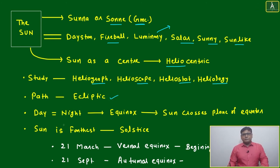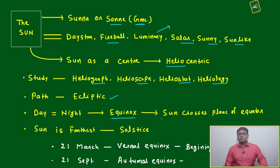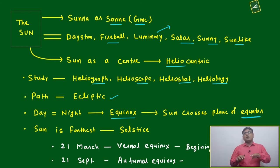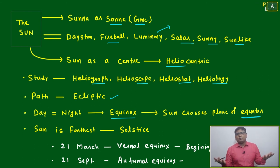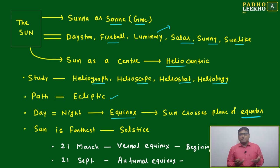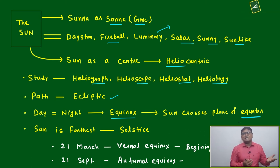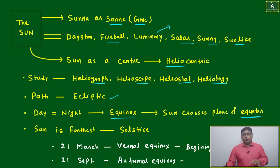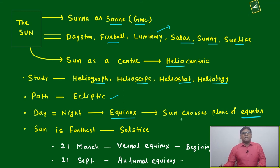When day is equal to night, we call it equinox. When the sun crosses the plane of the equator, that is equinox. This enriches your knowledge across multiple subjects — geography, history, philosophy, linguistics, social science, politics, constitution — a holistic understanding.